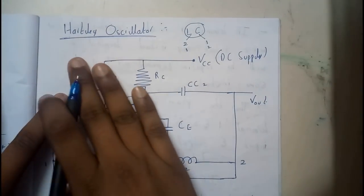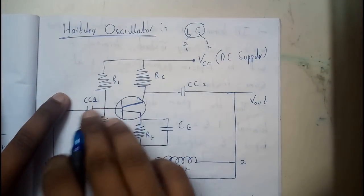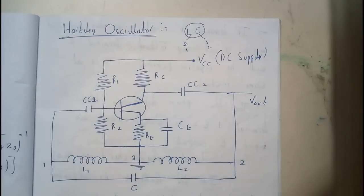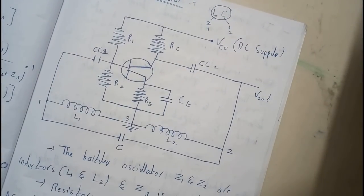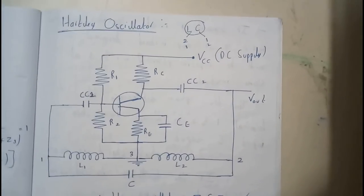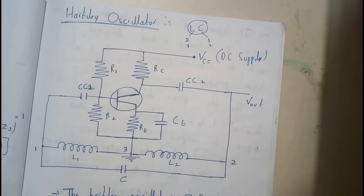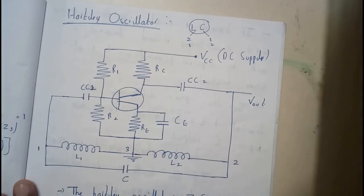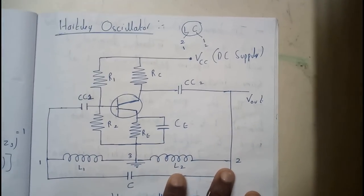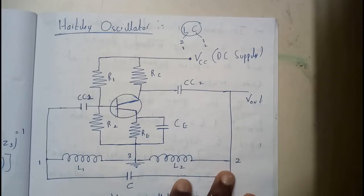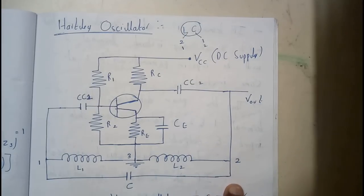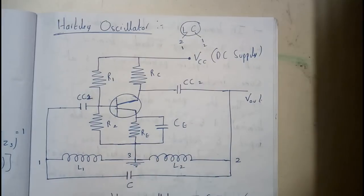This is the diagram. We will be discussing individually what the role of each and every element is. Now let us go through our tutorial on the Hartley oscillator and we will also be deriving the expression. This is the diagram of the Hartley oscillator — be ready to practice it, as you need to practice it perfectly with every individual resistor and its name.